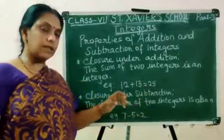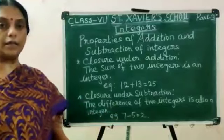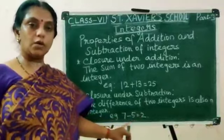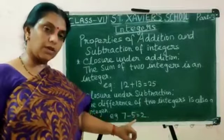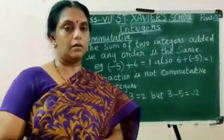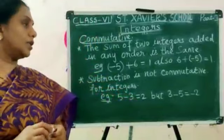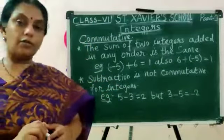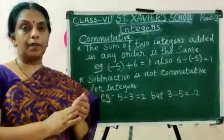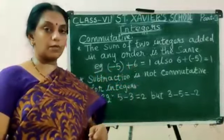Closure under subtraction: the difference of 2 integers is also an integer. Example: 7 minus 5 equals 2. So 7 is an integer, minus 5 is an integer, and 2 is also an integer. The next property is commutative property for addition and subtraction. The sum of integers added in any order is the same. Example: minus 5 plus 6 equals 1.